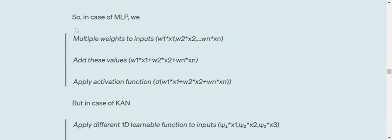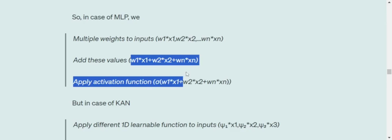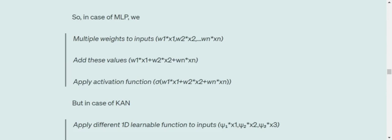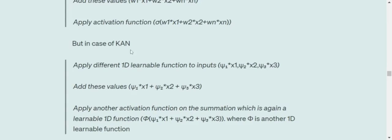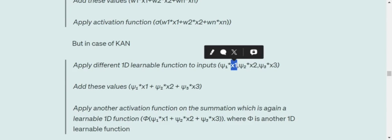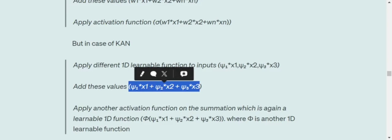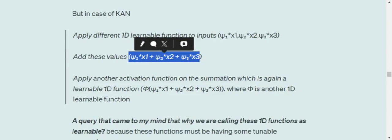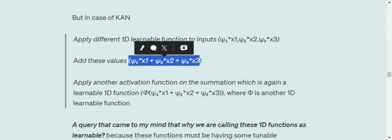So cutting it short, in case of an MLP, what we are doing? We are multiplying the corresponding weights to the input, we add them together and then apply an activation function. But in case of a KAN, we are applying a 1D learnable function to each of the inputs, Omega 1, Omega 2, Omega 3, adding them together and then applying another activation function which is a 1D function.